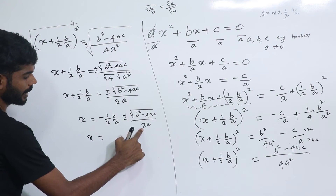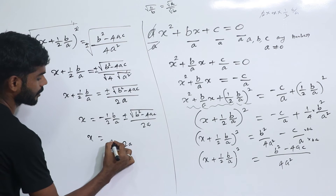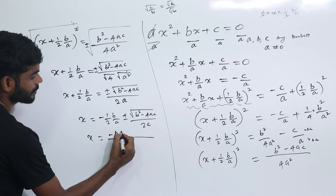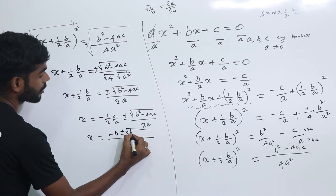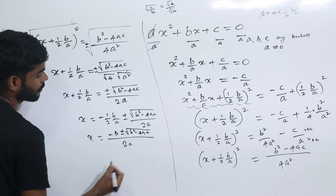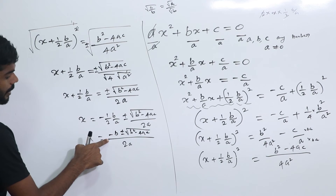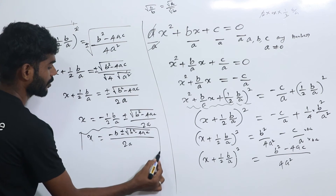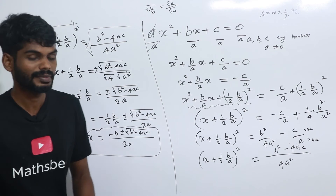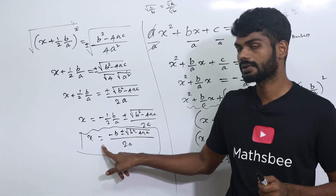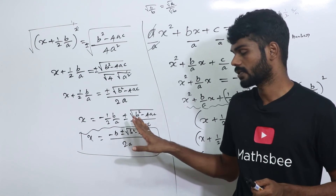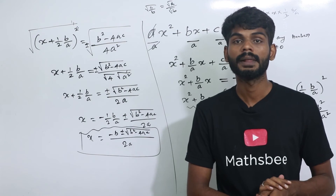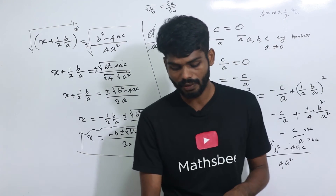We move the b by 2a term to the right hand side, taking 2a as the common denominator. So the numerator is minus b plus or minus root b squared minus 4ac, giving the quadratic formula: x equals minus b plus or minus root b squared minus 4ac, all divided by 2a.